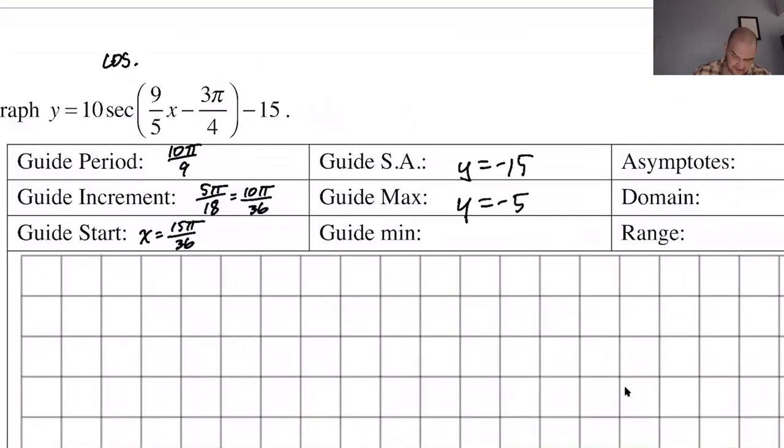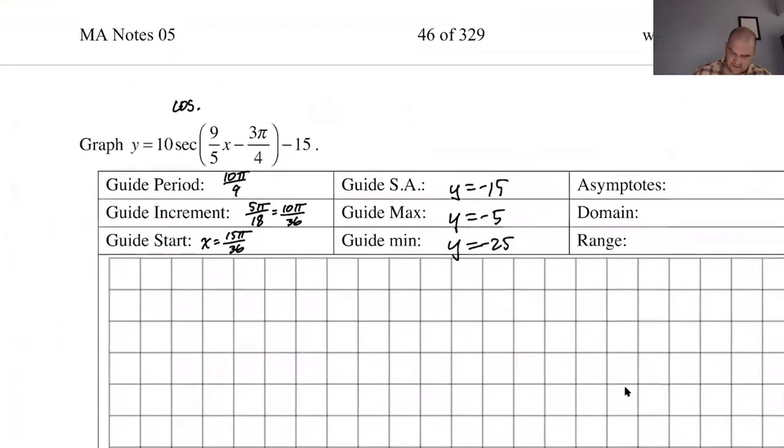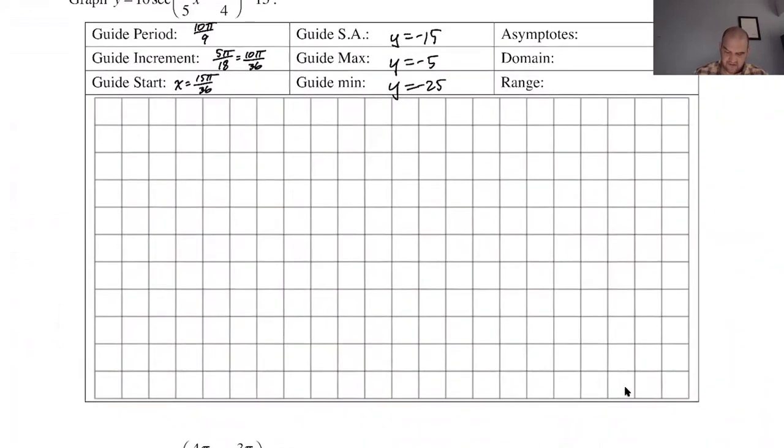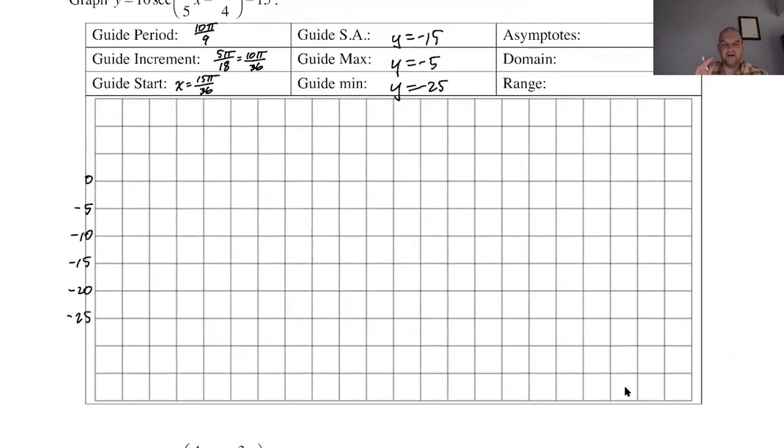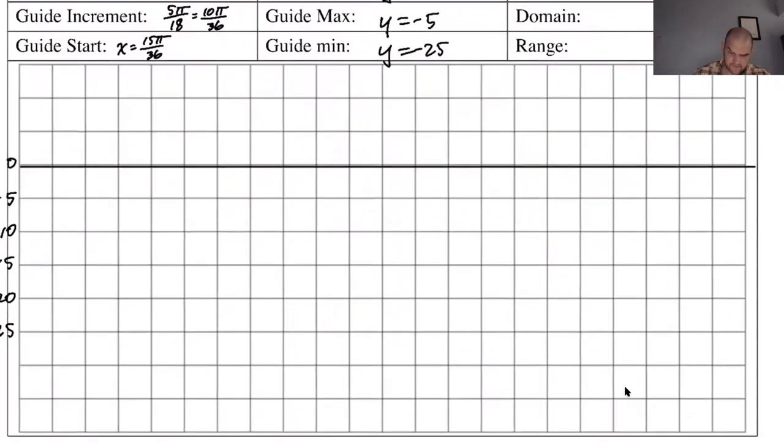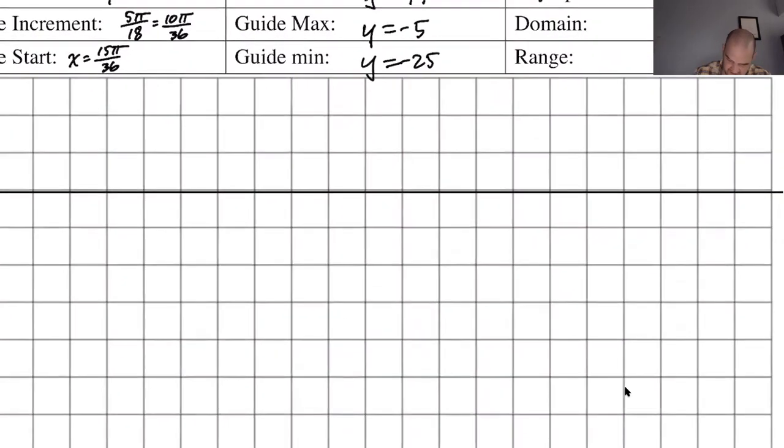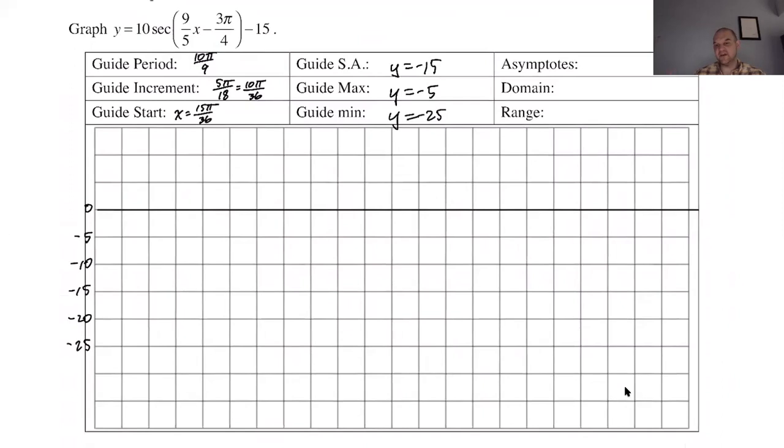So sinusoidal axis is y equals negative 15. I can go up 10 to y equals negative 5. I can go down 10 to y equals negative 25. And then asymptotes, domain, range, you save until the end. So now what we want to do is dot in everything for the guide function. So I need to go from negative 5 to negative 25. I think I'm actually just going to count by 5s and maybe put 0 here. So I can put in the x-axis. I always try to get the x-axis in my graphs. The y-axis, I just don't really care about. But you want to have the x-axis because it's where you're going to put all your tick marks and everything.